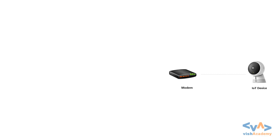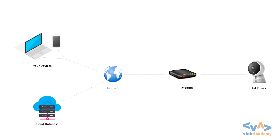Now, we assume that this IoT device — the CCTV camera — is installed and connected to a modem. This modem is connected to the Internet, and the Internet via the modem connects to other devices and the cloud database. Whatever video is recorded in this device gets saved to the database. Logs — like when the camera was on or off, when motion was detected, etc. — are also saved in the database. Other devices like laptops or mobile phones can connect with the database and fetch your videos from it.